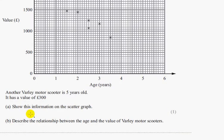Let's take a look. Another Vali Motor Scooter is 5 years old and it has a value of £300. Part A says show this information on the scatter graph, worth 1 mark.